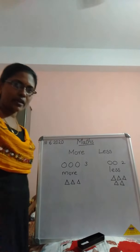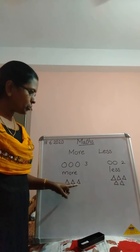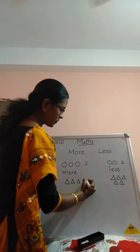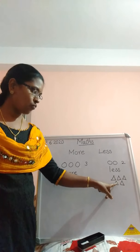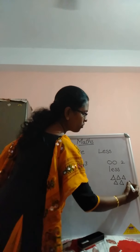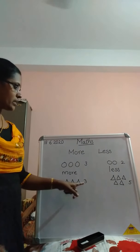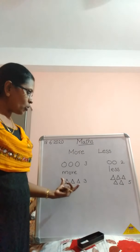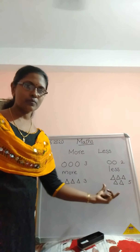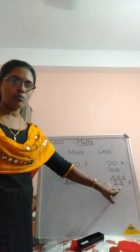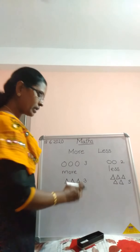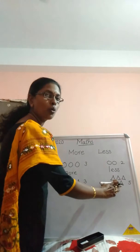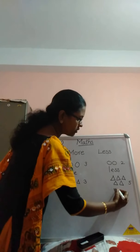Count the triangles. One, two, three. Here one, two, three, four, five — five triangles. And here three triangles. Which is more, this or this? Yes, this one is more. Here more triangles. When compared to this, here more triangles. More, less.